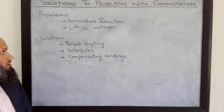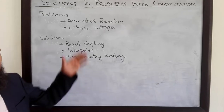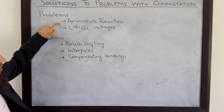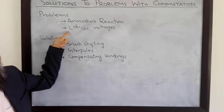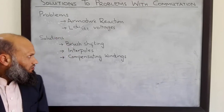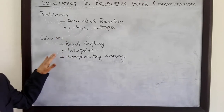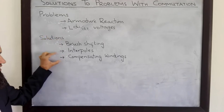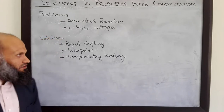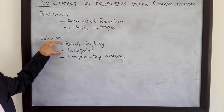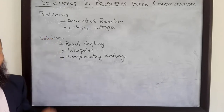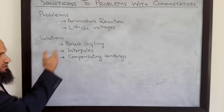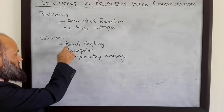Assalamu alaikum. We have talked about the problems associated with commutation in DC machines. Two important problems are armature reaction and LDI by DT voltages. We shall talk about three possible solutions to these problems: brush shifting, interpoles, and compensating windings. In today's lecture, we shall talk about the first two solutions, and the third solution will be discussed in the next lecture. Let's first talk about brush shifting.